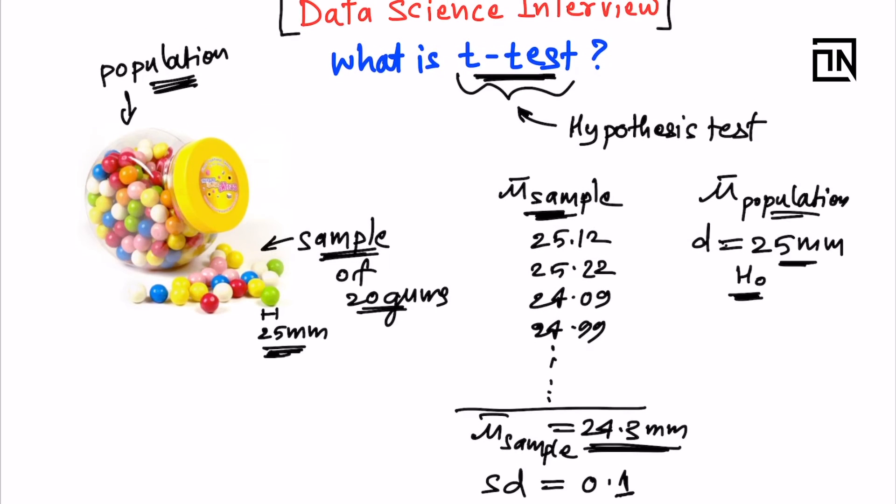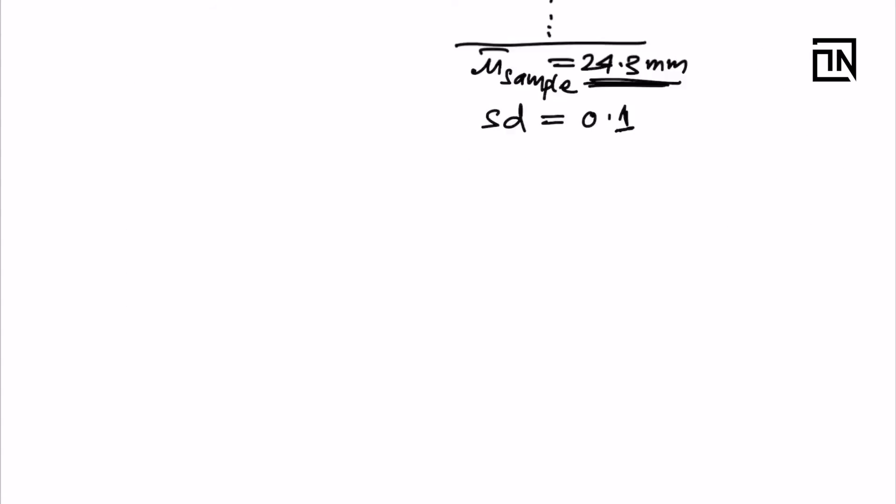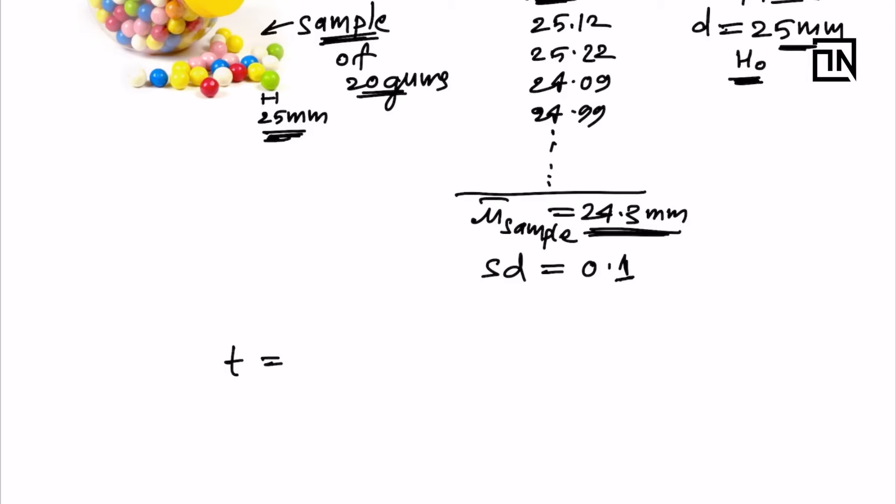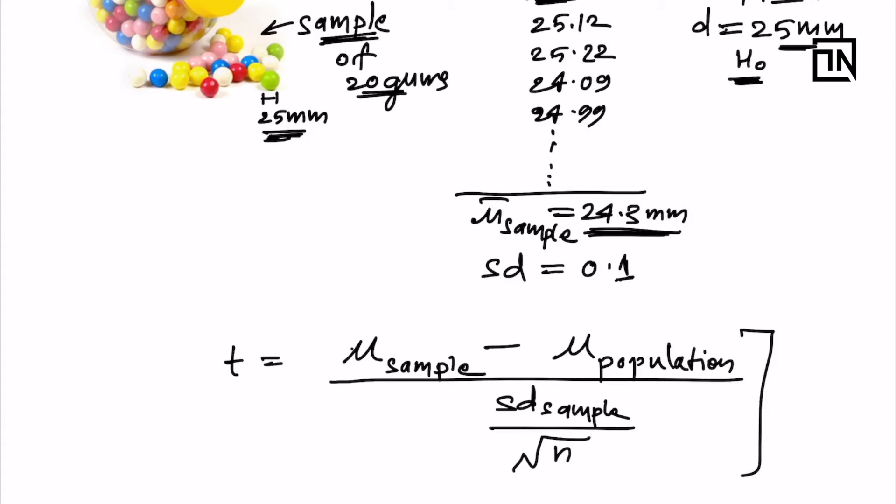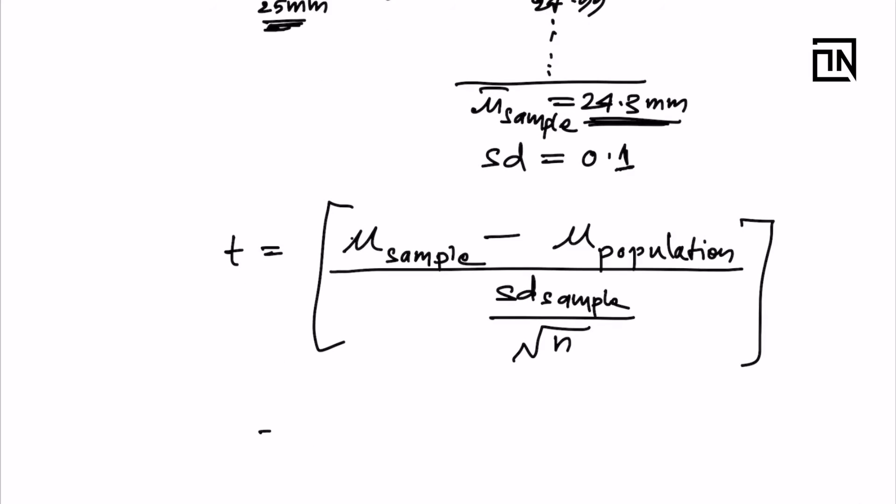Now I can compute a t-statistic. T-statistic is computed as mean of sample minus mean of population divided by the standard deviation of sample by square root of number of values. This is the formula which gives me the t-value for this example. I have 20 gums, so I can replace these values.